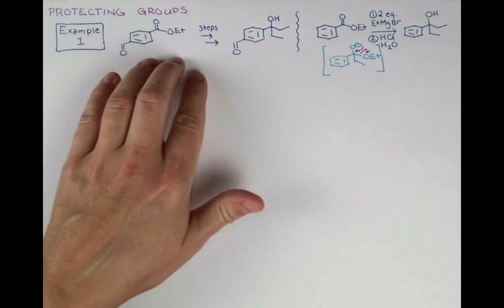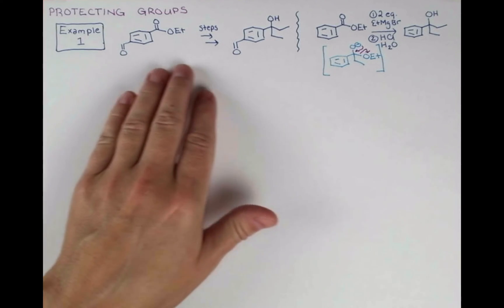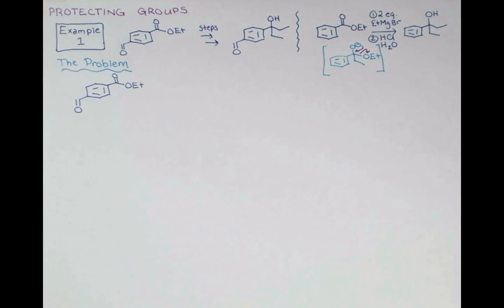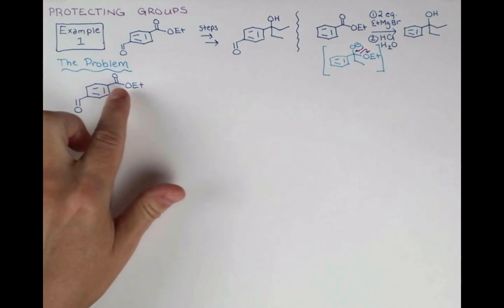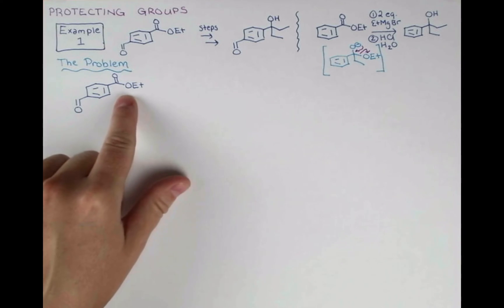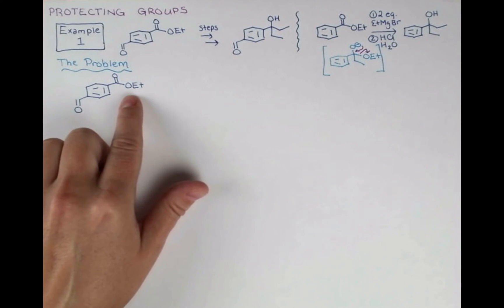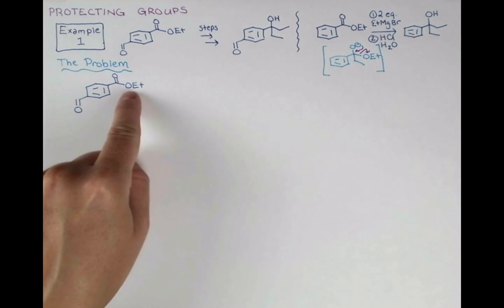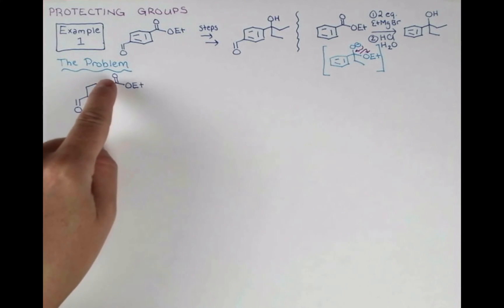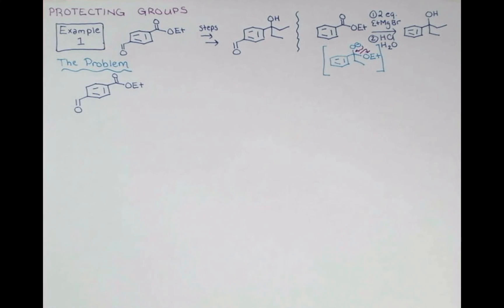So what's the problem with applying that reaction to this transformation here? Well, the problem is that the ethyl ester over here is not the most reactive part of the molecule. We have this aldehyde, and this aldehyde is prone to attack. It's even more reactive than the ester. The ester has resonance from the lone pair on this oxygen that's actually stabilizing this functional group.